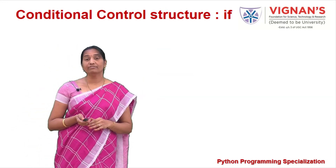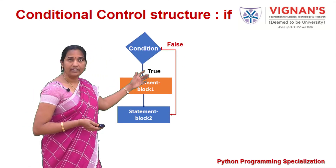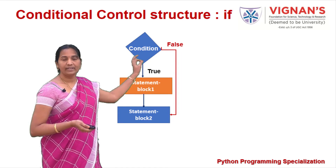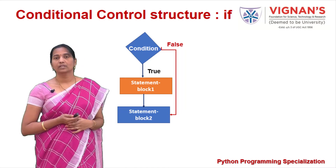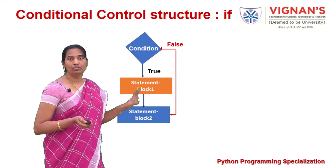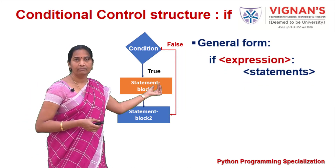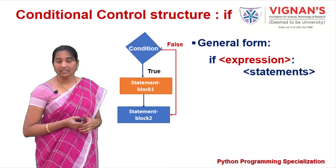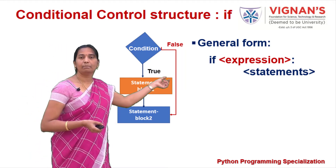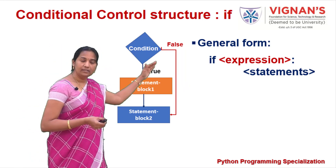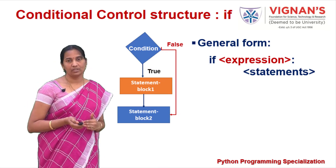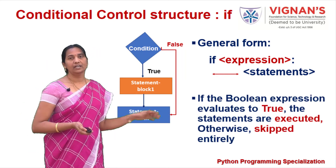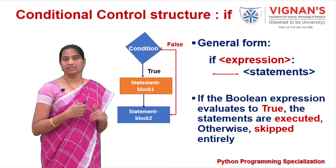Let's understand how a simple if statement can be used to skip a set of instructions. When the condition is true, the statements in block 1 are executed. When the condition is false, block 1 is skipped and the statements in block 2 are executed. The general form is: if expression, then statements. Whatever statements you want to execute as part of the if must be placed with uniform indentation.